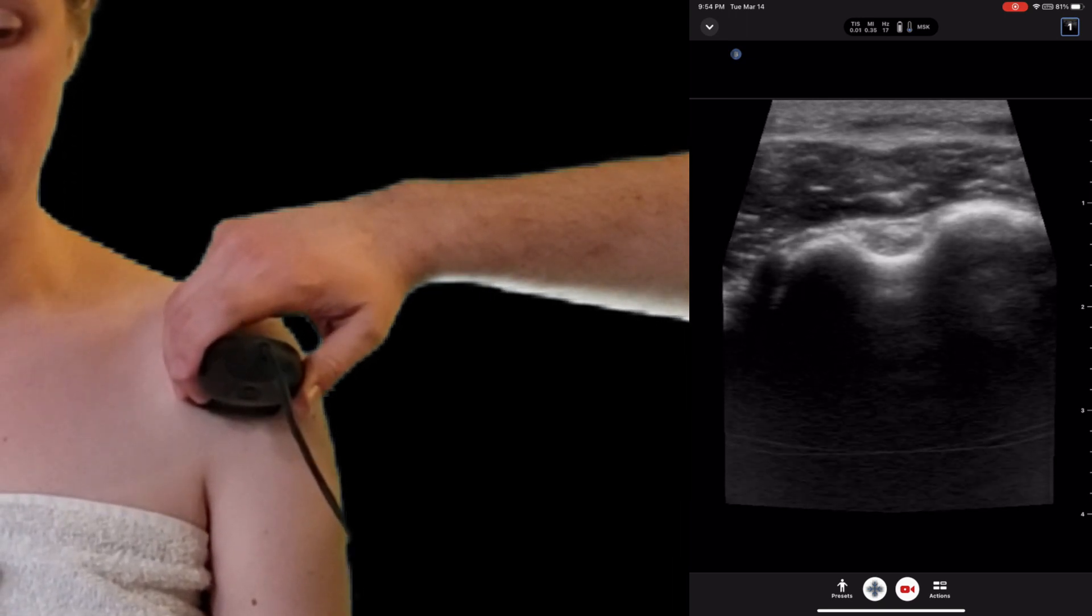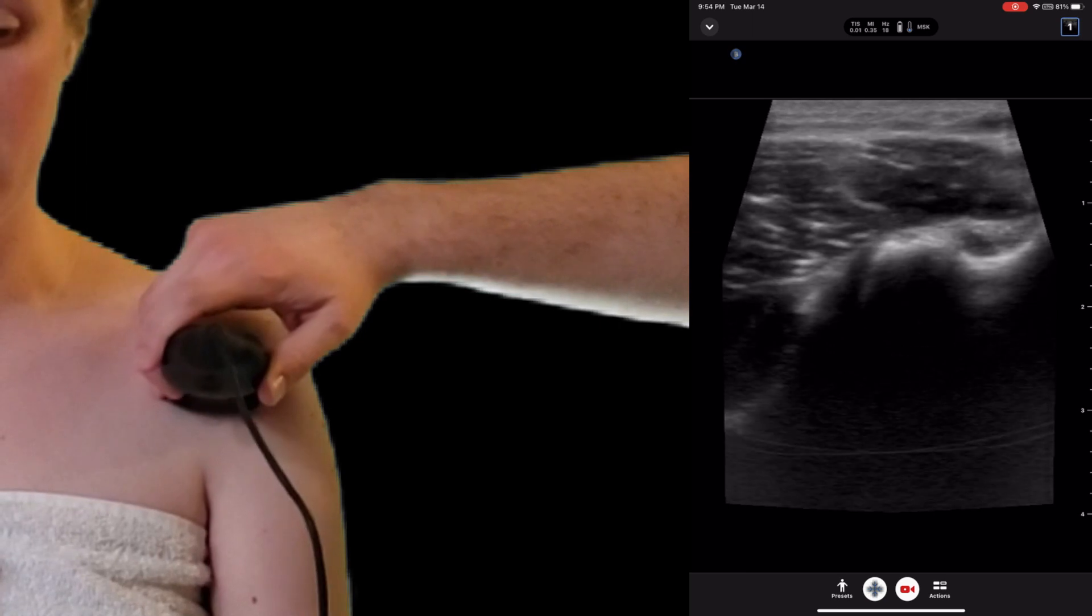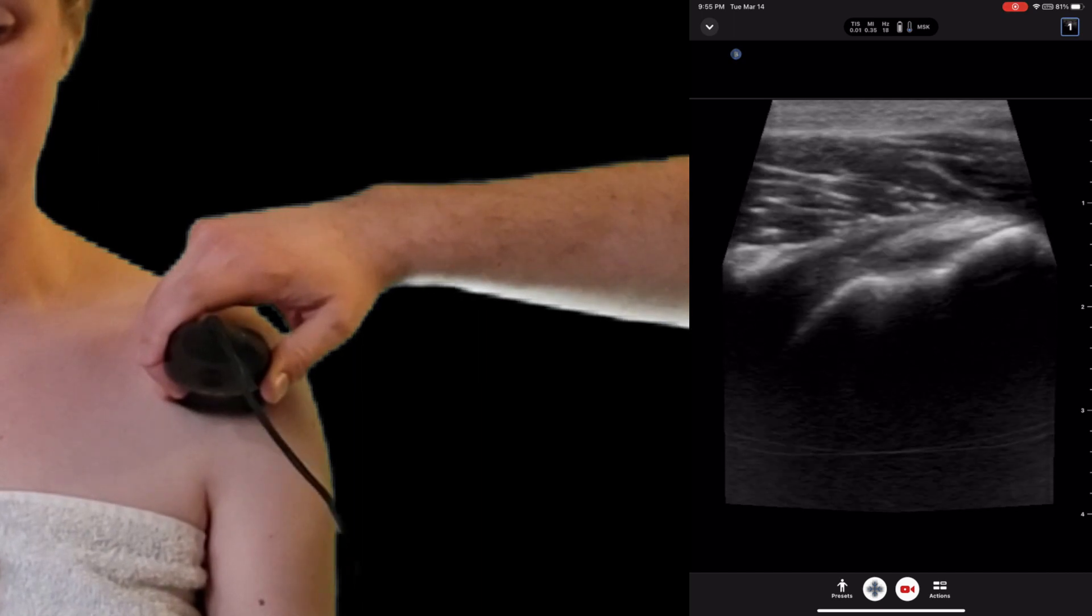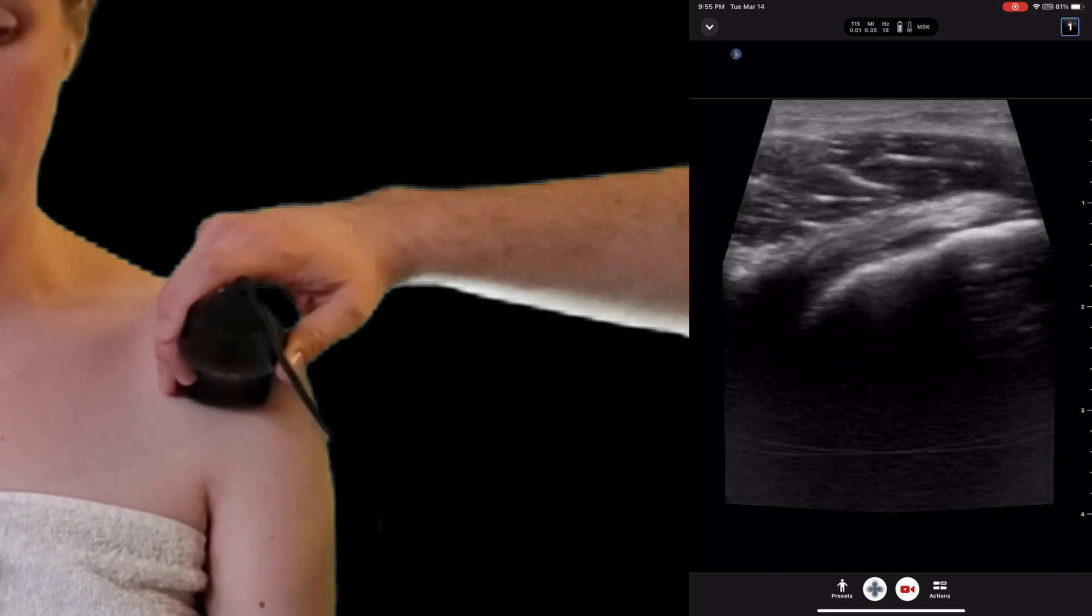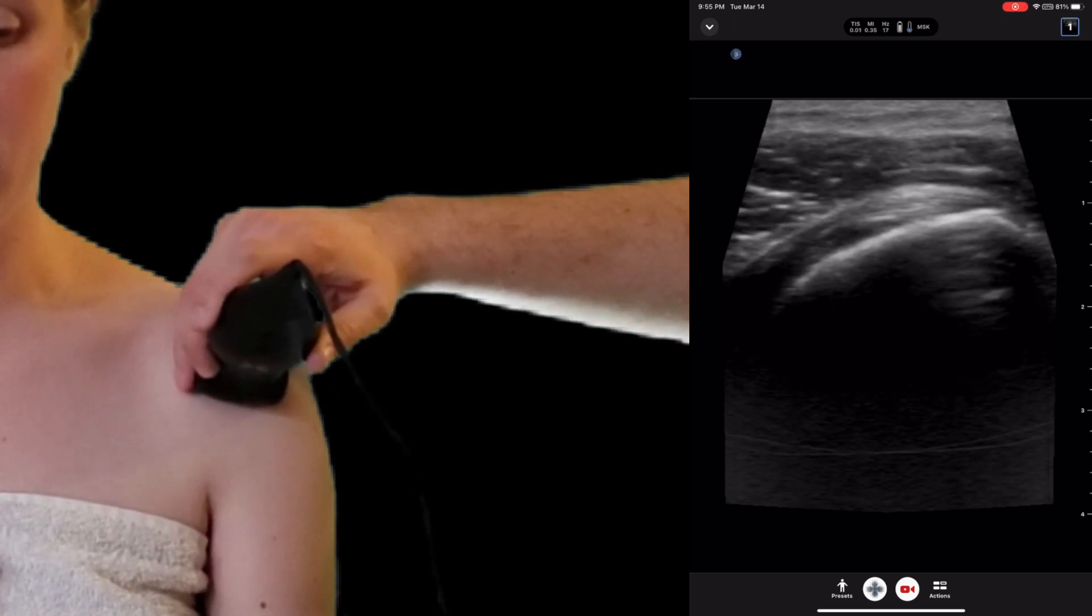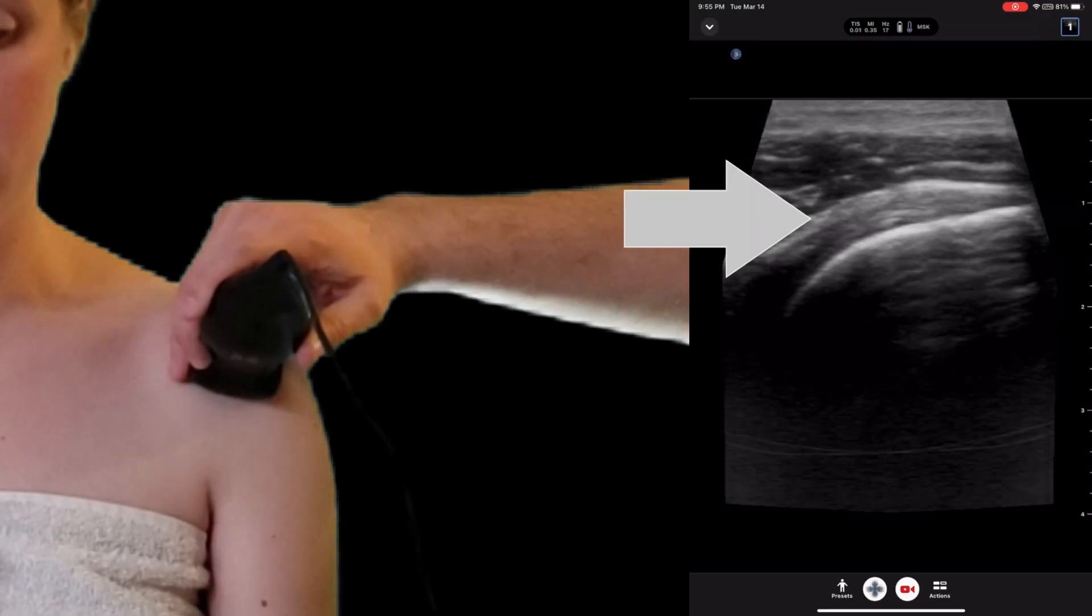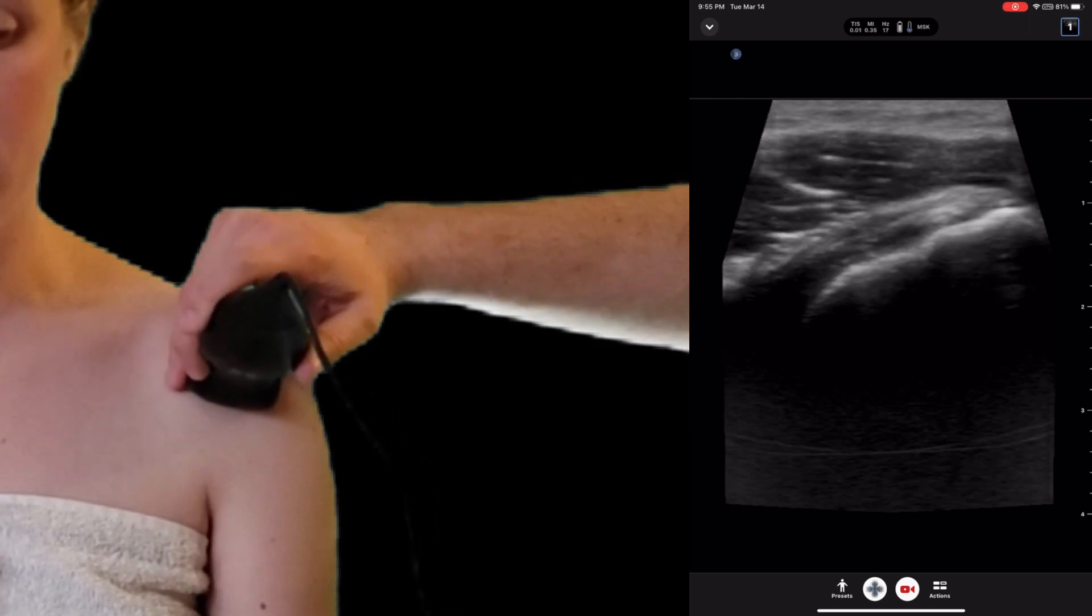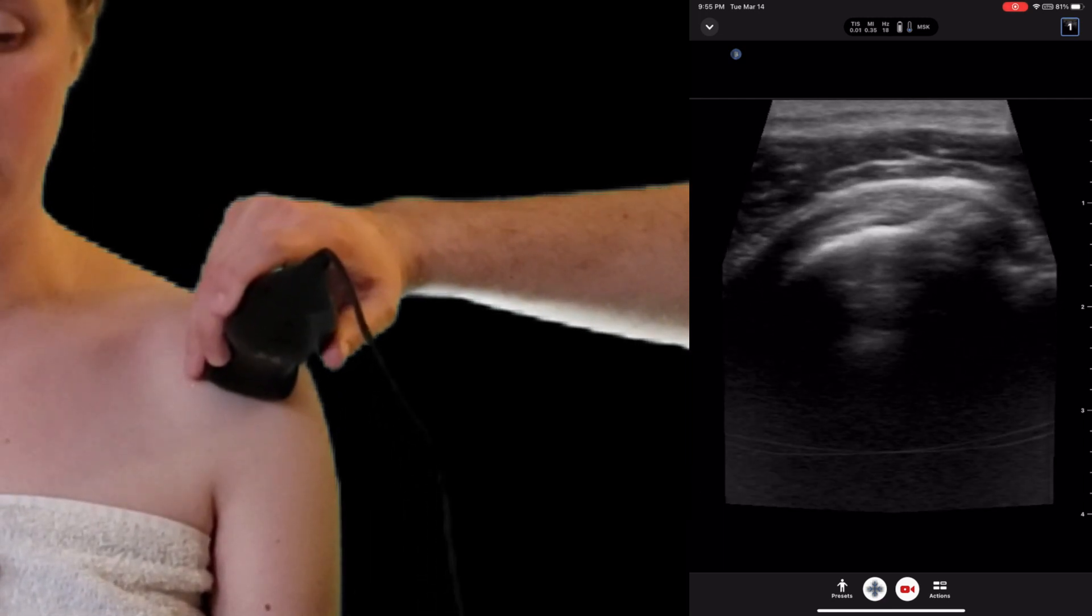The subscapularis tendon will be medial to this. You want to have your patient externally rotate their hand, and that will bring the subscapularis tendon into view. The fibers will all be consistent, and will have a bird's beak appearance. You want to evaluate this tendon all the way to the superior aspect and the inferior aspect, looking for any defects in the subscapularis tendon.